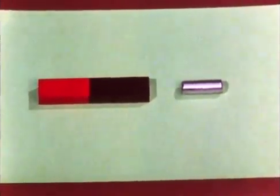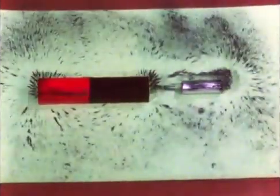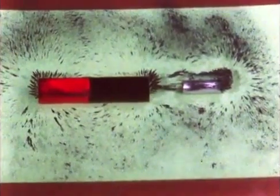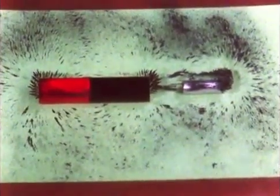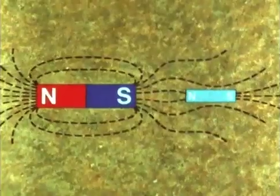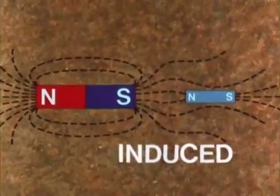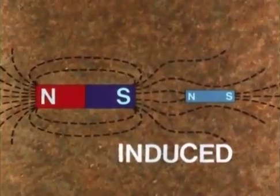If we put a piece of magnetic material, say iron, in the magnetic field of a bar magnet, and produce the picture of the magnetic field with iron filings again, we see that the lines of force have concentrated in the iron, and it has itself become a magnet. We say that magnetism has been induced into it, and we call the process induction.